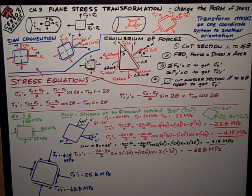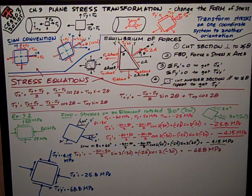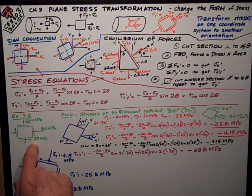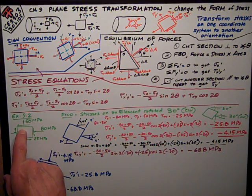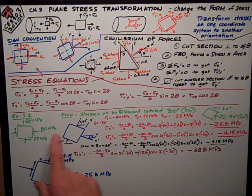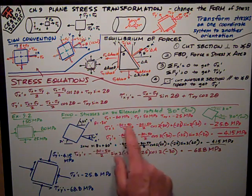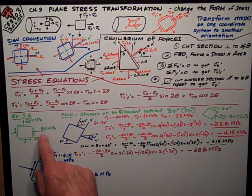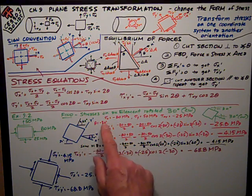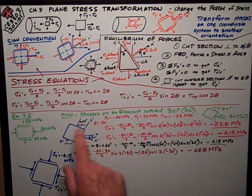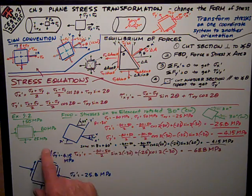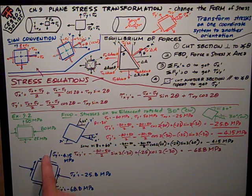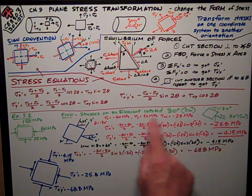It's best to look at an example. This is example 9.2 from the book where it gives you this state of stress in the x, y coordinate system. Positive 50 for sigma y prime. I mean sigma y. Negative 80 because it's compression for sigma x. I've written it there. And my shear stress is 25 megapascals, but it's down on the right side, so it's negative. So here I've written them out.